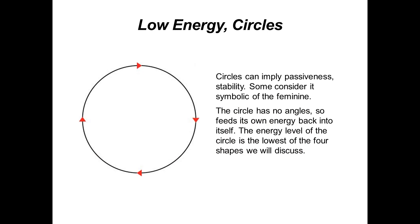We're going to talk about four different shapes. The first is circles. Circles can imply passiveness and stability; some consider the circle symbolic of the feminine. The circle has no angles, so it feeds its own energy back into itself. Of the shapes we will discuss, this has the lowest energy level.